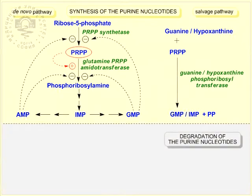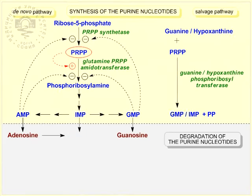The first step in the degradation of the nucleotides is their hydrolysis to nucleosides, catalyzed by nucleotidases and nonspecific phosphatases. Adenosine, under the action of adenosine deaminase, undergoes deamination and is converted to inosine. Purine nucleoside phosphorylases then convert inosine and guanosine into the respective purine bases, hypoxanthine and guanine.